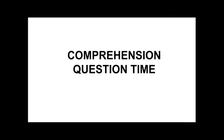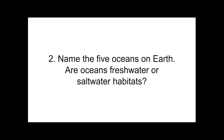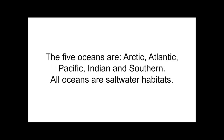In this next comprehension question, we have to go back to the beginning of first grade when we learned about maps — the seven continents and the names of the oceans. Number two: Name the five oceans on Earth. Are oceans freshwater or saltwater habitats? The five oceans are the Arctic Ocean, the Atlantic Ocean, the Pacific Ocean, the Indian Ocean, and the Southern Ocean. All oceans are saltwater habitats.